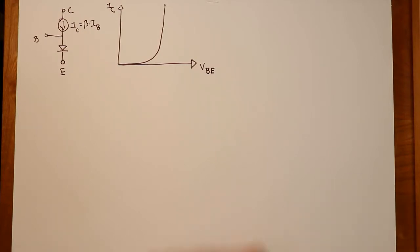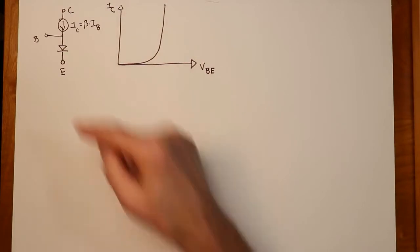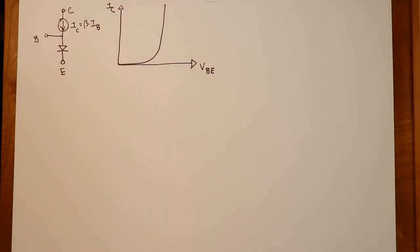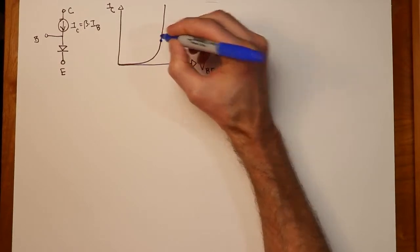Very abrupt sort of transition somewhere around six or seven tenths of a volt. Now, if you have this in a DC case, in other words, if we have a certain current flowing down through here, that current would be represented by a certain point. Let's say right here.